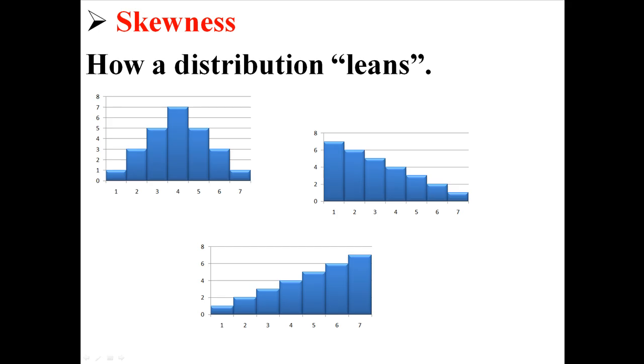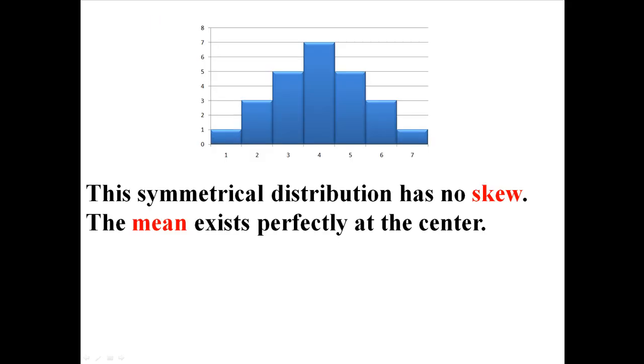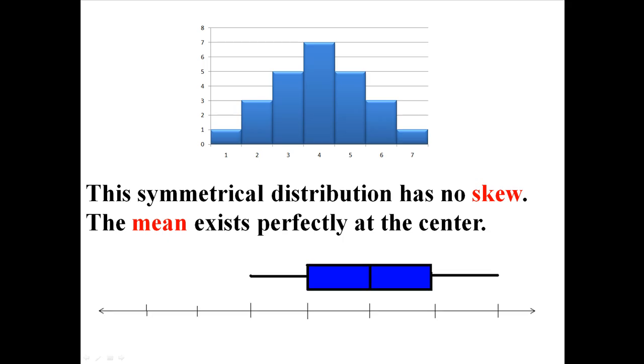First of all, this one is a symmetrical distribution. It has no skew, which means that the mean exists perfectly at the center. So if you were to draw a box plot, it would probably look something like that, with everything fairly balanced.